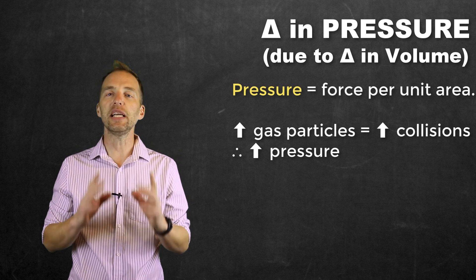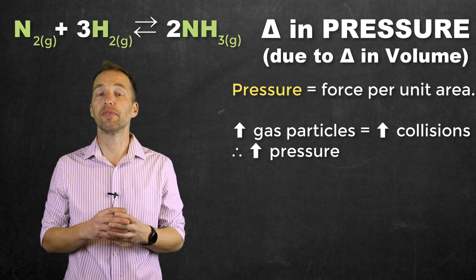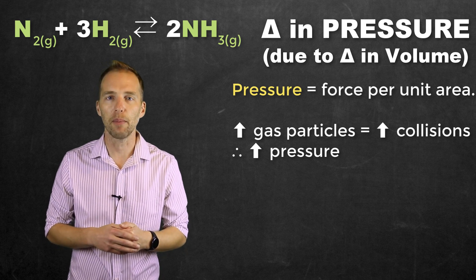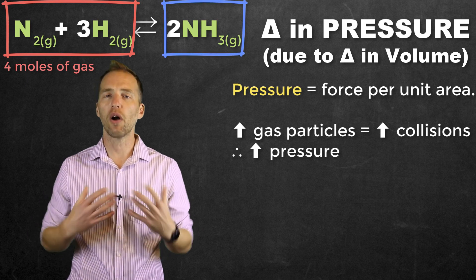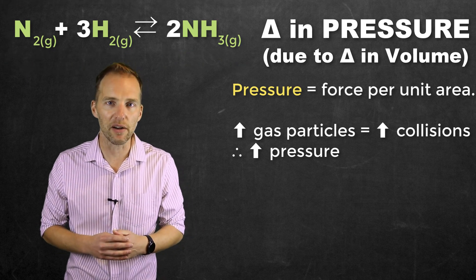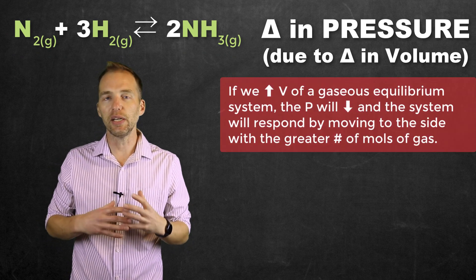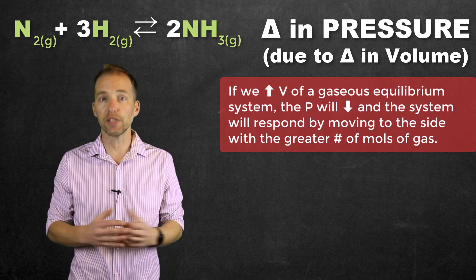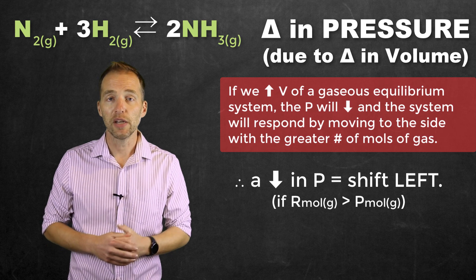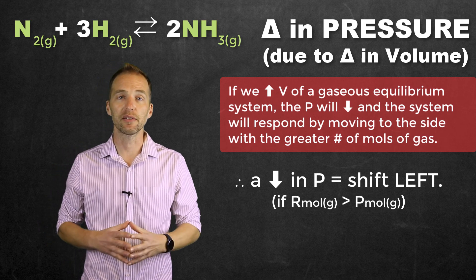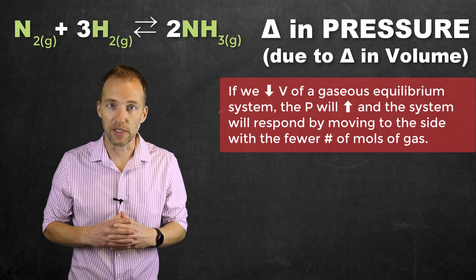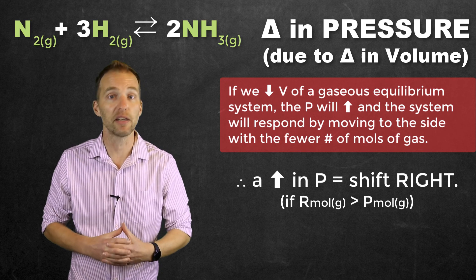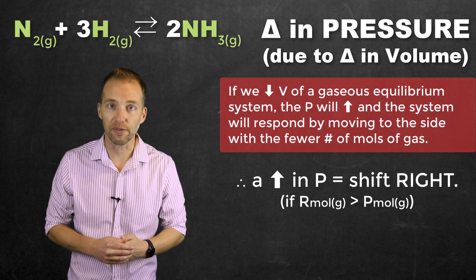For an equilibrium system with an unequal number of gas molecules — such as the Haber process — there are more gas molecules on the reactant side than the product side, so the reactant side exerts greater pressure. If we increase the volume, pressure decreases, and the system responds by shifting to the side with more gas molecules — in this case the reactant side. If we decrease volume, pressure increases, and the system shifts to the side with fewer gas molecules — the product side.